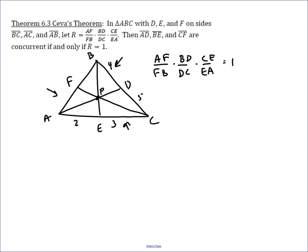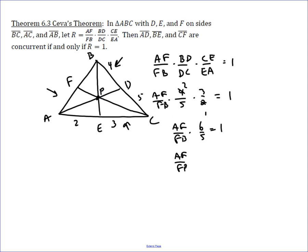If BD over DC is 4/5 and EC over AE is 3/2 and AF over FB is unknown, you can find AF over FB very easily. It equals AF over FB times 6/5 equals 1. Multiply both sides by 5/6 and you find that AF over FB equals 5/6. A very nice application of this theorem.